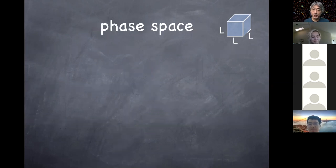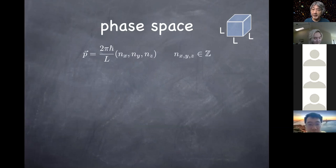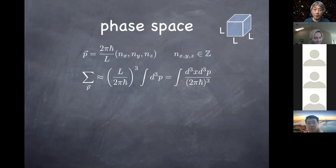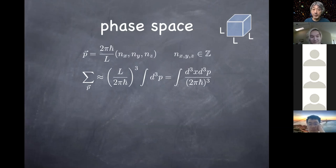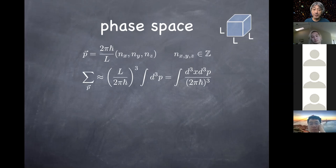Just the last point about mode expansion, because we'll use it later. In this periodic box, momentum vectors must be quantized. In the limit where L is large, the interval between allowed momentum values becomes smaller and smaller as 1 over L, so it becomes essentially continuous. The discrete sum then becomes a continuous integral — this is basically the definition of the integral by stretching out the summation symbol.